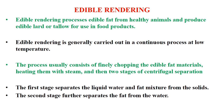Rendering can be both edible and non-edible. Edible rendering means all materials and products are suitable for human consumption. Two important conditions apply: raw materials should be from healthy animals, not from condemned or dead materials, and they should be preserved and handled in the most hygienic manner. The rendering machines must be maintained in the best sanitary conditions, and the plant should be separate from non-edible rendering. Edible rendering produces edible lard or tallow for use in food products and is generally carried out in a continuous process at low temperature.